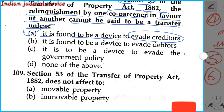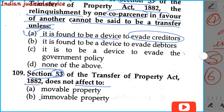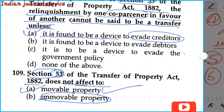Question number 109: Section 53 of the Transfer of Property Act 1882 does not affect — option A: movable property; option B: immovable property. Section 53 deals with immovable property and does not affect movable property. So our answer is option A — movable property.